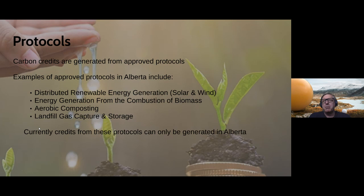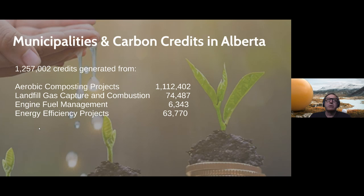Currently, credits from these protocols can only be generated in Alberta — if you want to sell credits into the Alberta market, you have to generate those credits in the province. So what has this meant for municipalities? 1,257,002 credits have been generated from the following project types in Alberta by municipalities: aerobic composting at 1.1 million tons, landfill gas capture at 74,000, engine fuel vent management, and energy efficiency projects. The energy efficiency projects came largely from street light replacements — replacing street lights with LEDs.